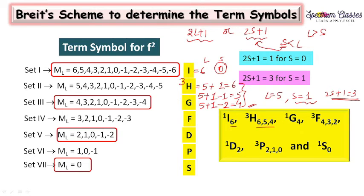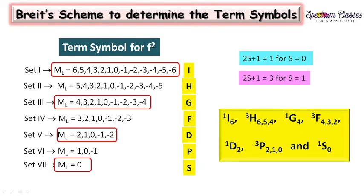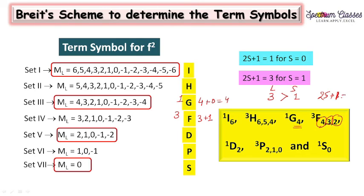In this manner we have all the term symbols for the f2 configuration. The ground state term symbol for f2 is 3H4. For f12 it is 3H6. The reason is that f2 is less than half-filled so we choose the minimum J value (J = 4), while f12 is more than half-filled so we choose the maximum J value (J = 6).